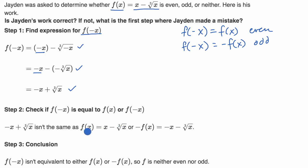Yep, it's definitely not the same as f(x). Or -f(x), which is equal to -x - ∛x. Now that seems a little bit fishy. Did he do the right thing right over here? Is -f(x) equal to -x - ∛x?